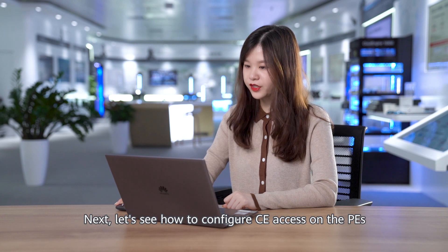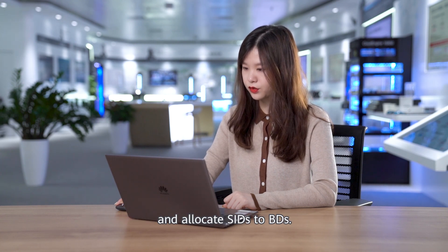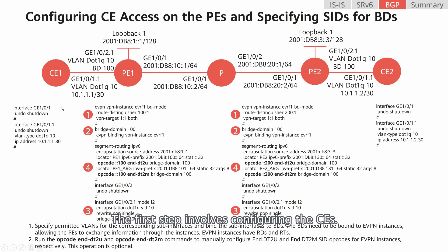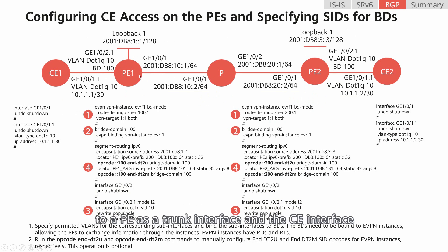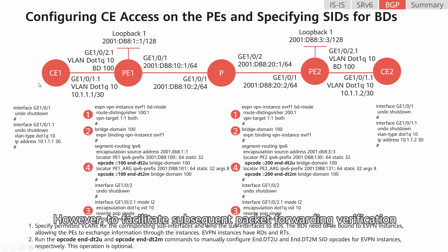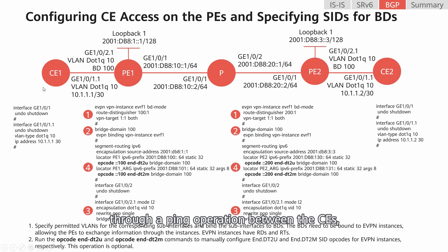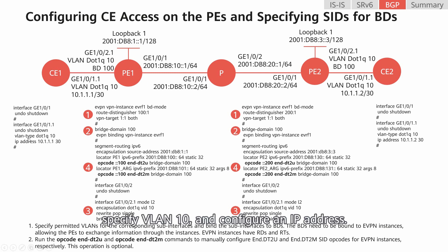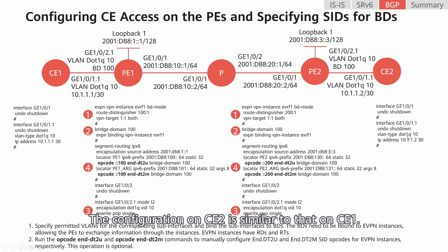Next, let's see how to configure CE access on the PEs and allocate ACs to BDs. The first step involves configuring the CEs. Typically, we need to configure the CE interface connected to a PE as a trunk interface, and the CE interface connected to a host as an access interface, and then add the two interfaces to the same VLAN. To facilitate subsequent packet forwarding verification through a ping operation between CEs, create a VLAN dot1Q subinterface on CE1, specify VLAN 10, and configure an IP address. The configuration on CE2 is similar to that on CE1.